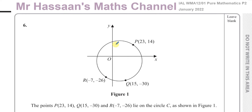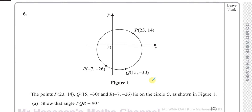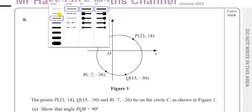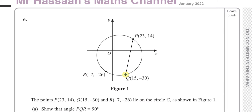First of all, you've got this circle that's drawn. The points P, Q, and R are marked on the circle with their coordinates — they lie on the circumference of the circle, as shown in figure 1. Now, show that angle PQR is 90 degrees. I'm going to draw a line between P and Q, and between Q and R, and we have to show that this angle here is the right angle, 90 degrees.